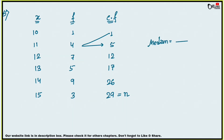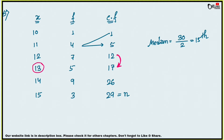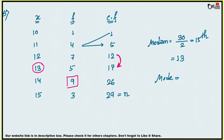For odd n, median = (n+1)/2 th term = (29+1)/2 = 15th term. The cumulative frequency goes from 12 to 17 for x=13, so the 15th observation corresponds to x=13. Median = 13. For the mode, the highest frequency is 9, corresponding to x=14, so mode = 14.